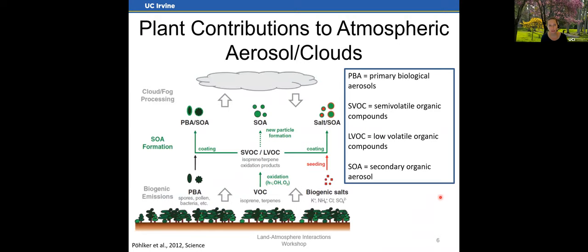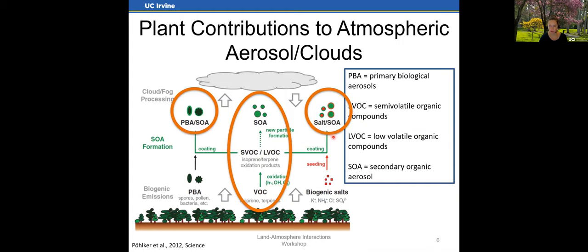In addition to emissions of primary particles, plants are also the largest source globally of gas phase volatile organic compounds (VOCs), such as isoprene or other terpenes like alpha-pinene or beta-caryophyllene. These compounds are highly reactive, and once they enter the atmosphere, they undergo oxidative chemistry to form semi-volatile or low-volatility organic compounds. These undergo gas-particle partitioning to condense onto pre-existing particle surfaces or nucleate to form new particles — this organic condensable material is referred to as secondary organic aerosol, or SOA.